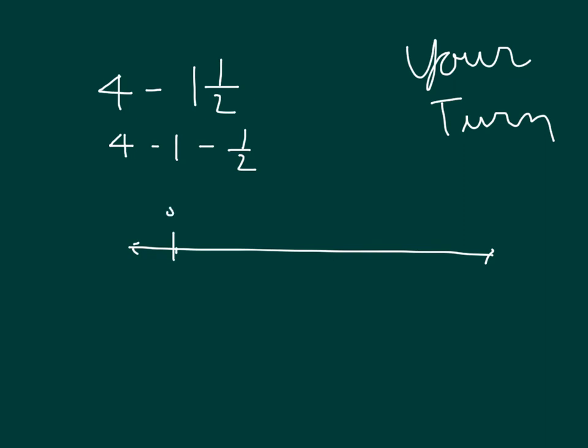Here's 0, 1, 2, 3, and 4. First, we would be at 4, and then we would subtract 1 to get to 3, so that we would have 3 minus 1 half.